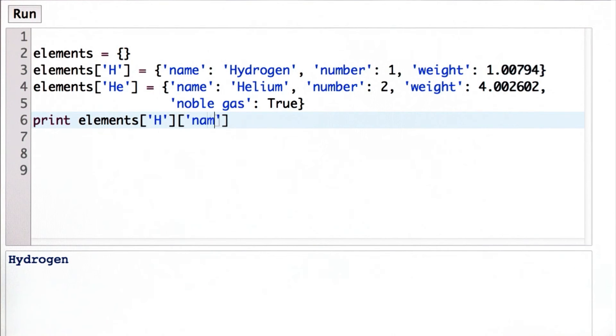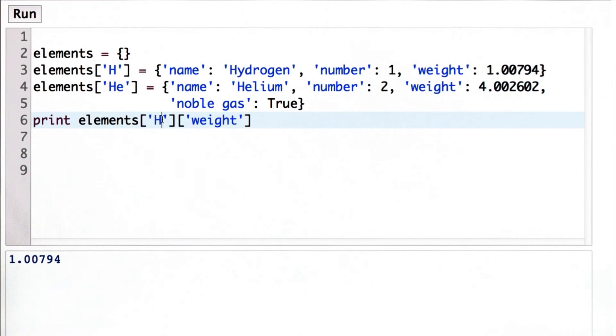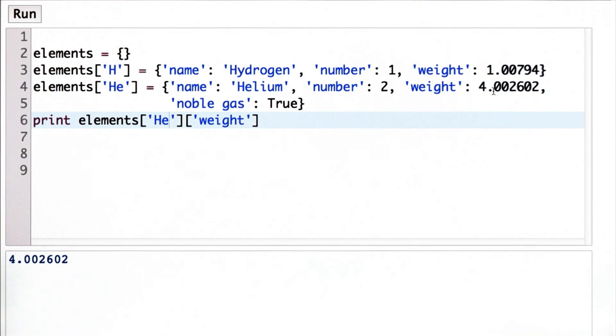We could change this to look up some other property. Let's look up the weight. And we can change the element to look up the value for helium instead of for hydrogen. And now we get the 4.002, which was the weight of helium.